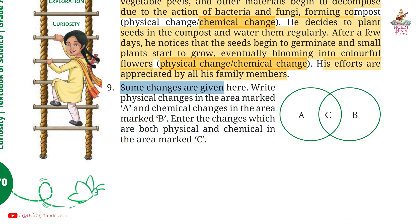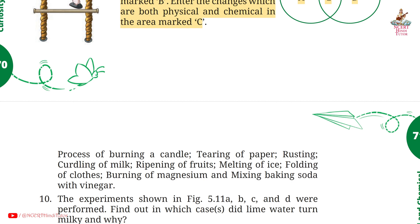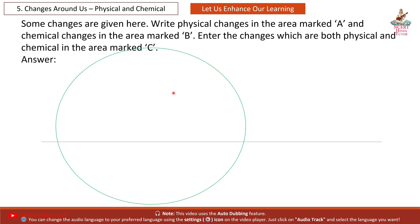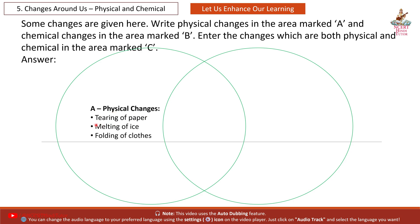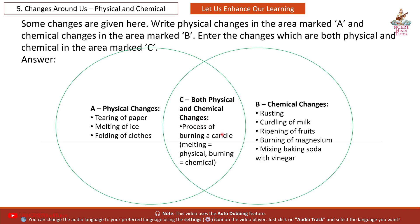Question 9: Some changes are given here. Write physical changes in the area marked A, chemical changes in the area marked B, and changes which are both physical and chemical in area marked C. The answers are shown in two circles — you can note these down.